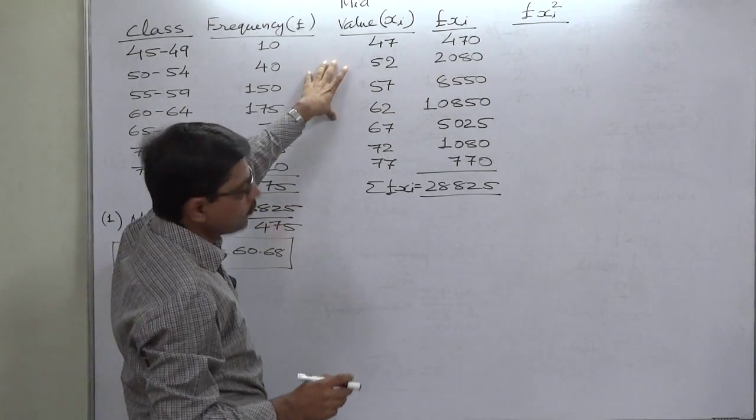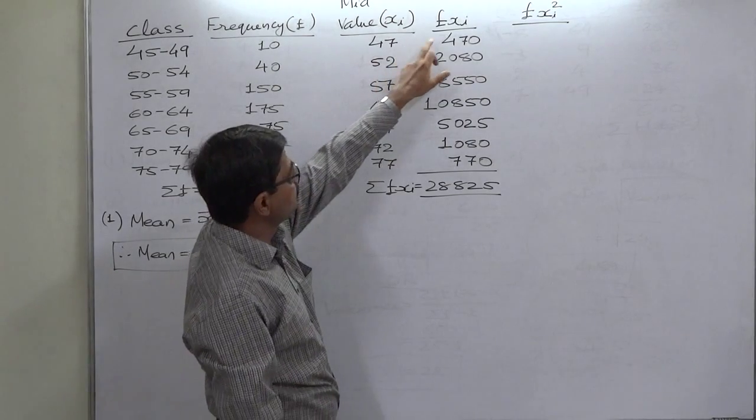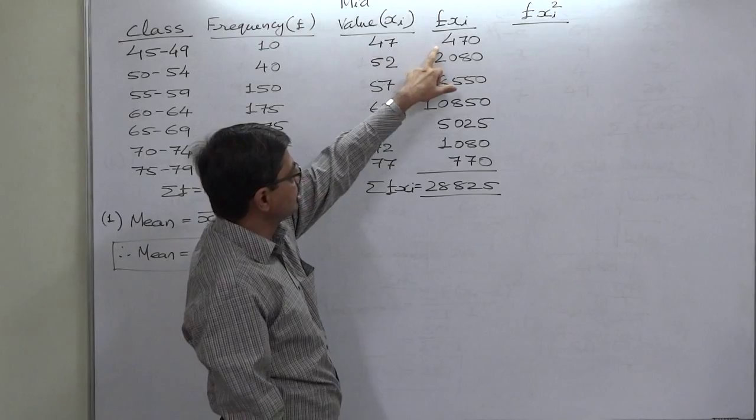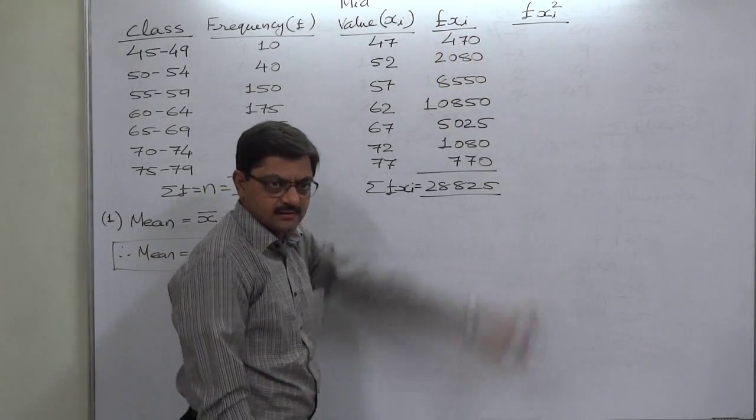x square into f. But we can directly find out fx square by multiplying x with fx. The multiplication of x with fx will give us f into x square.